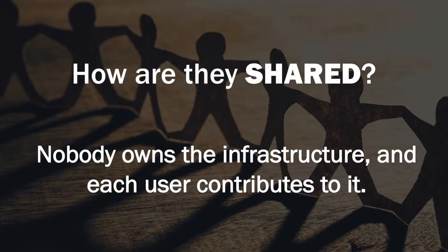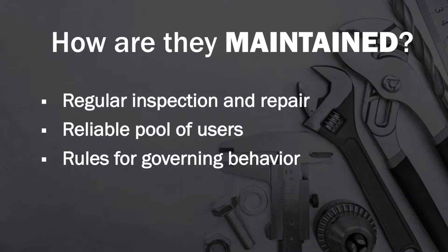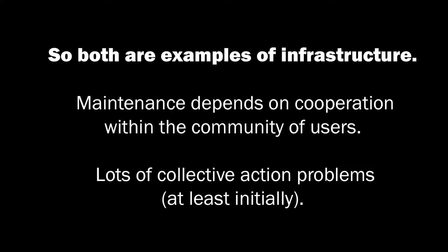Now sharing — how are they shared? Nobody owns the farmer-managed irrigation system, and nobody owns the Monero network. Each user contributes to the farmer-managed irrigation system by helping to maintain it, and each node keeps a copy of the transaction in the case of Monero. How are they maintained? You need to regularly inspect and repair physical irrigation canals, and also inspect the algorithm you're using for the blockchain and for your currency. You need a reliable pool of users — a group of farmers — to use and maintain it, and a group of nodes to keep these transactions.